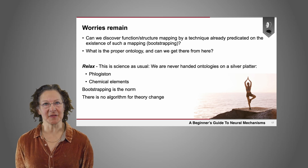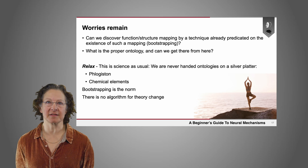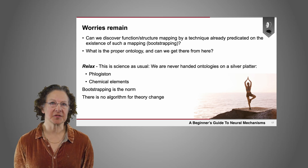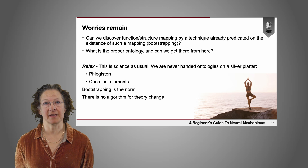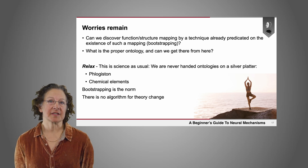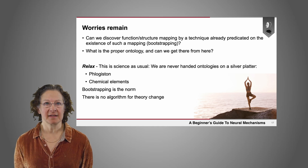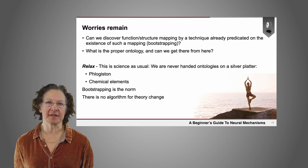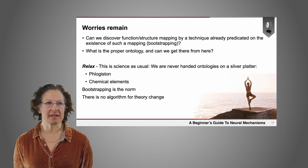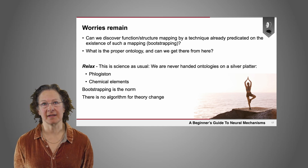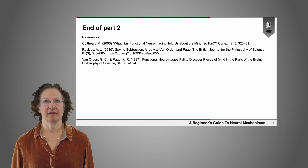But if you look back at the history of science, it turns out that this is just science as usual. We are never handed ontologies on a silver platter. You could look back at the history of chemistry, where people thought there was a substance called phlogiston that could explain burning — it turns out there's no such thing. But through bootstrapping, the development of the table of elements and understanding of chemistry showed us there's no phlogiston, and no need for it, because burning is explained by oxidation. So bootstrapping in science is the norm, and there's no algorithm for theory change. We're just at a much earlier stage in neuroscience than we are in chemistry, and there is reason to think that things like neuroimaging will get us to a better understanding of brain function.